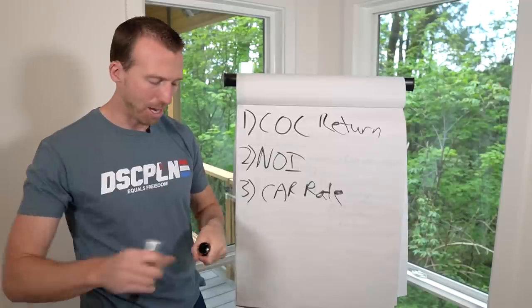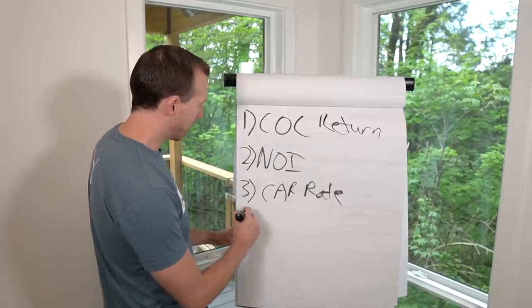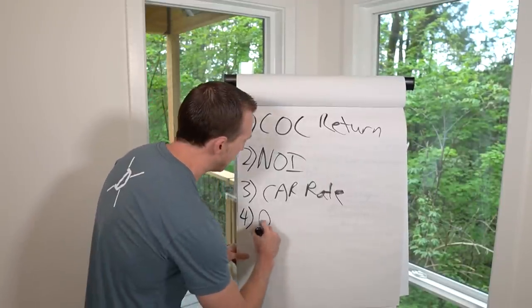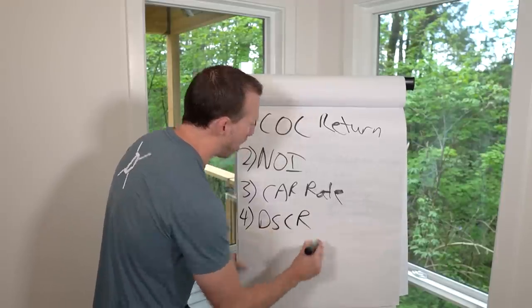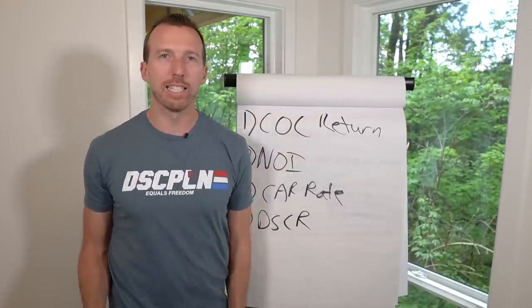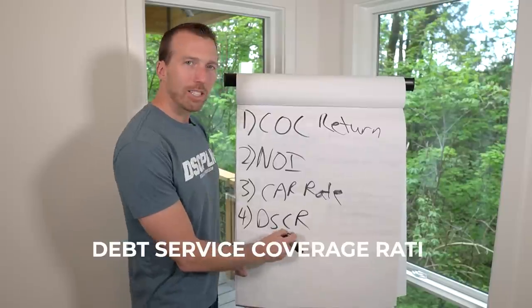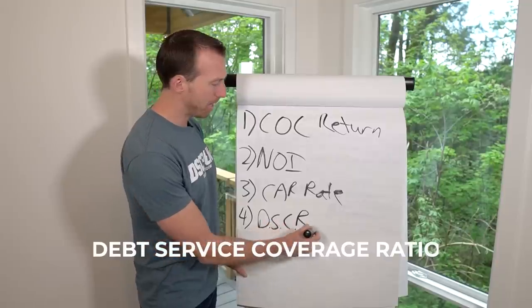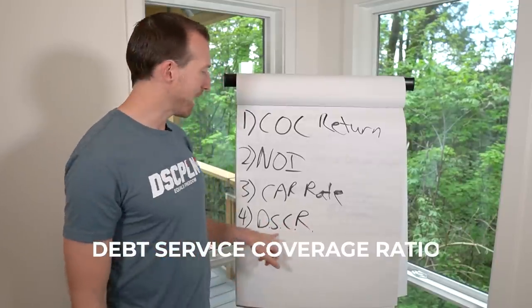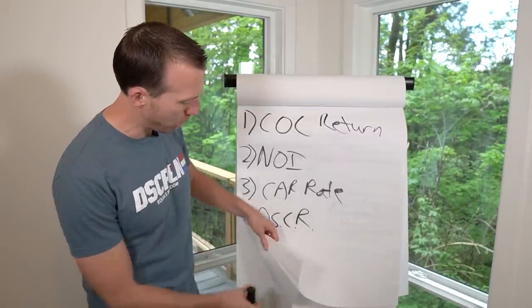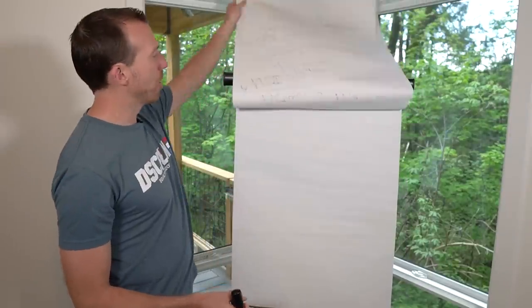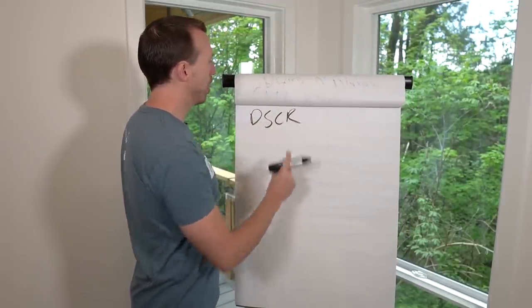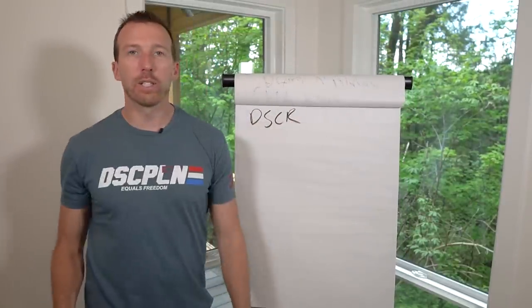Let's go over the fourth one. The fourth formula most important to me is DSCR — Debt Service Coverage Ratio. What is a Debt Service Coverage Ratio, and why is it so important?